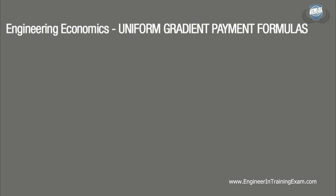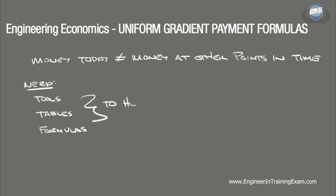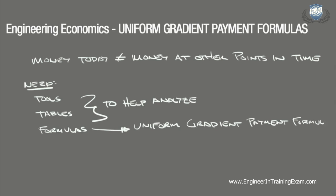As explained in a previous video, money does not have the same value at different points in time. For this reason, we need tools, tables, formulas, and various economic factors to reference when it is necessary to compare two complex alternatives. A series of these formulas are known as the uniform gradient payment formulas.